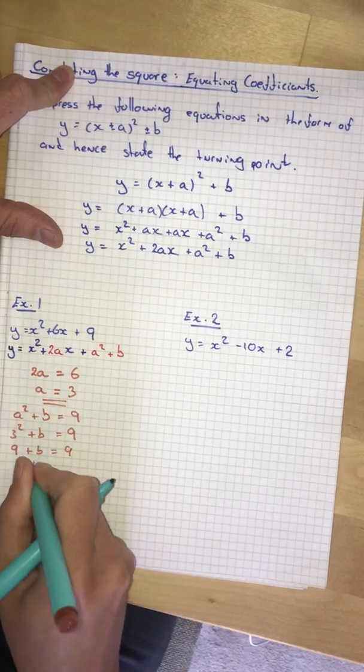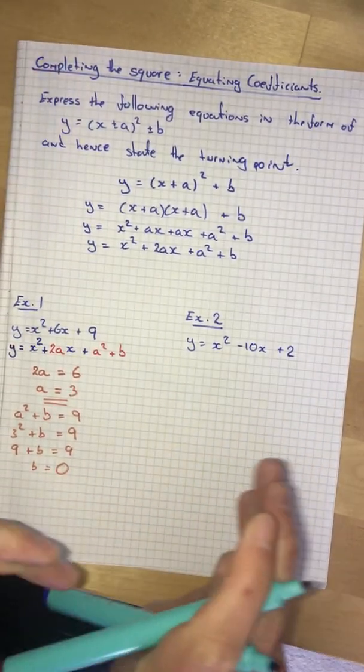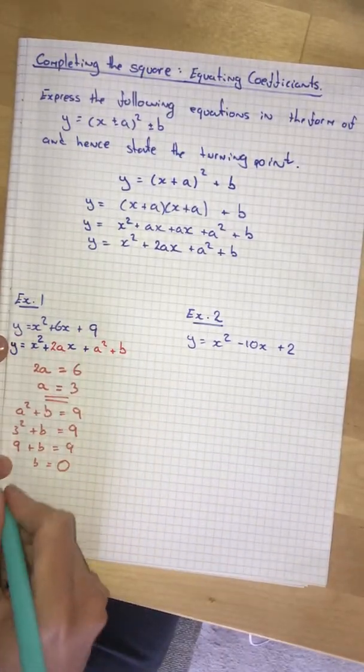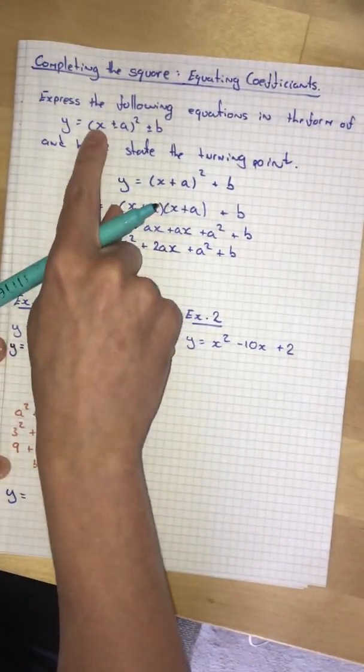3 squared is 9. 9 plus b equals 9, which means b equals 0. And now I have the equation that I can just write down.